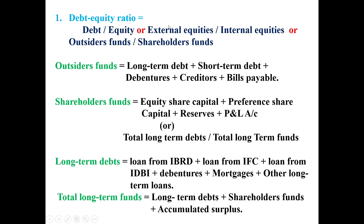The Outsider Fund includes long-term debt plus short-term debt plus debenture plus credit tax plus bills payable. For the long-term debt component, this includes loans from IBE, IFC, IDBI, debenture, mortgage, plus other long-term loans.